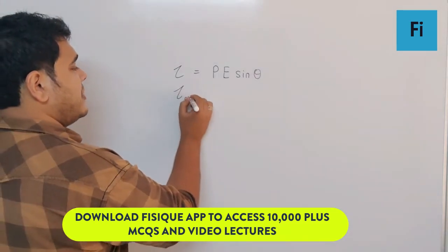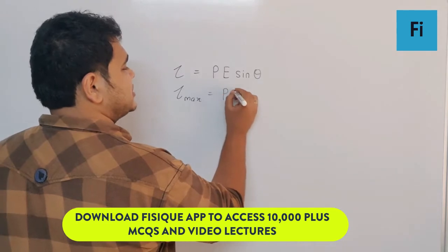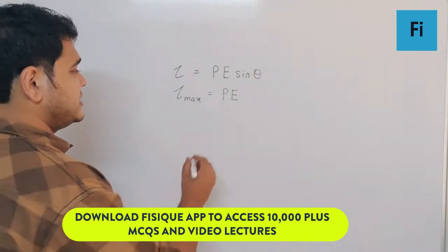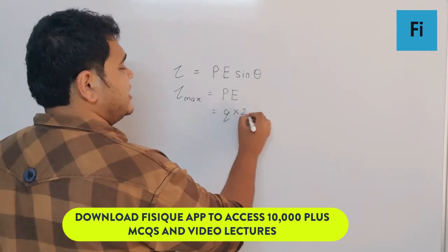So for maximum torque, it's just P·E. Now P can be written as charge into the length, and electric field as E.